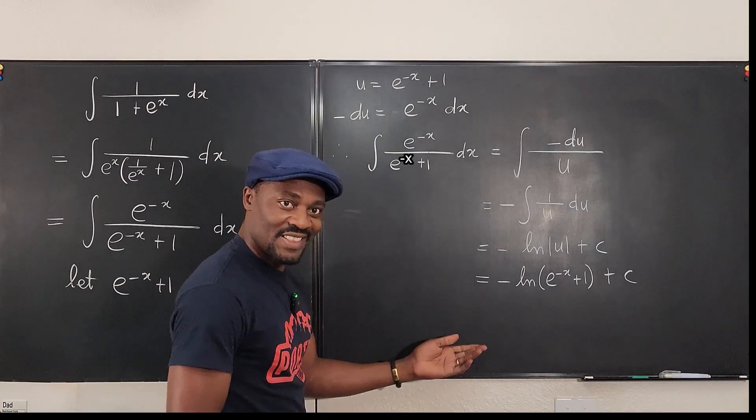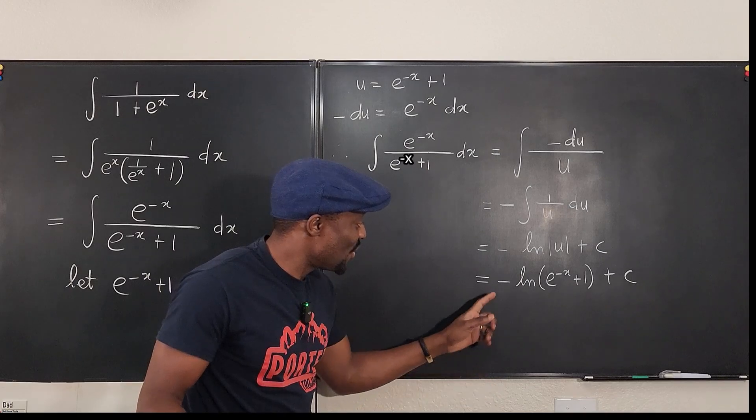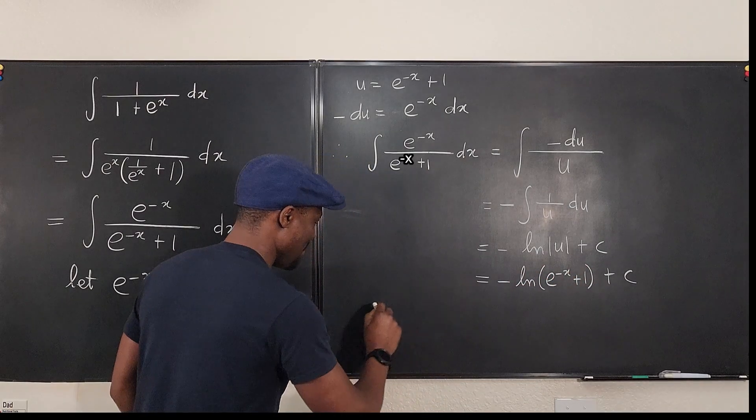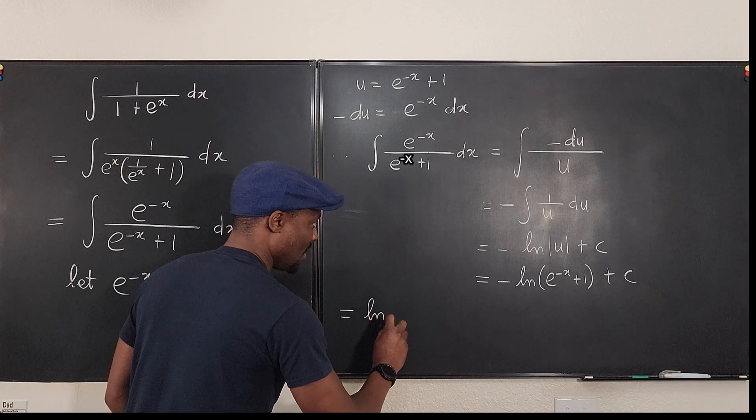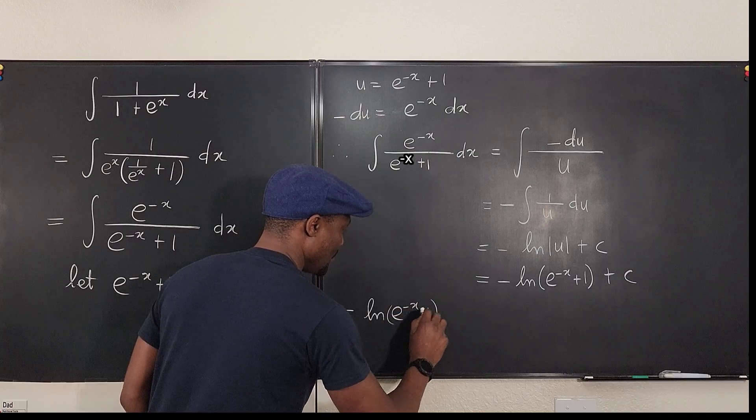This is the answer I would write. But we can make it better. You know, this minus 1 can go up here. So that, let me write it here. This is now equal to the natural log of e to the minus x plus 1 raised to power minus 1.